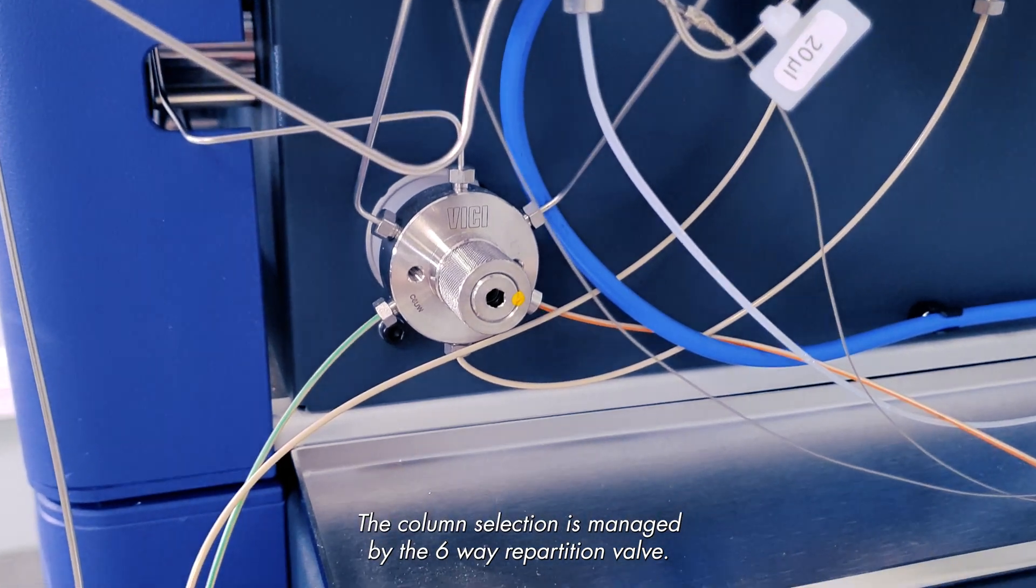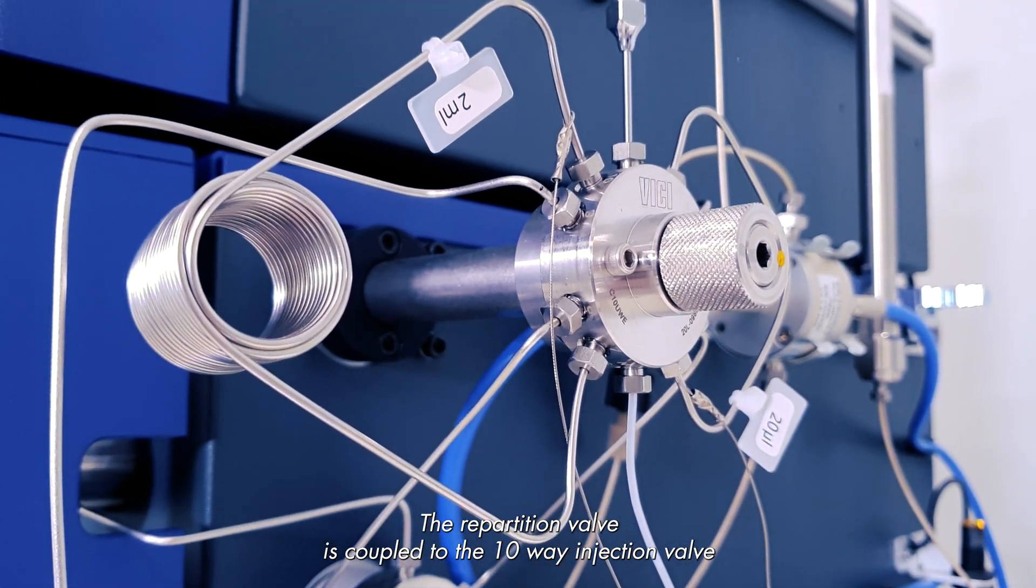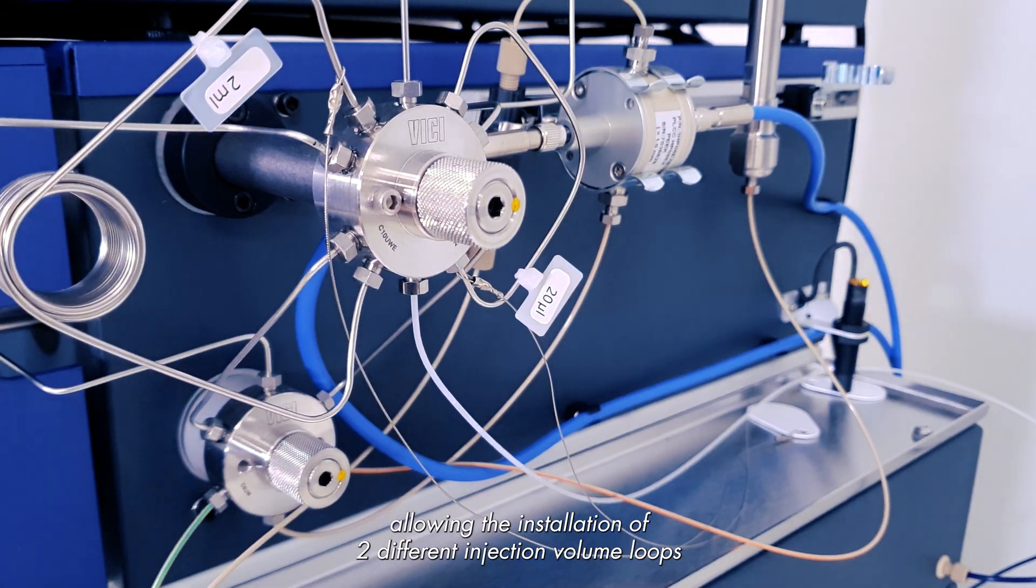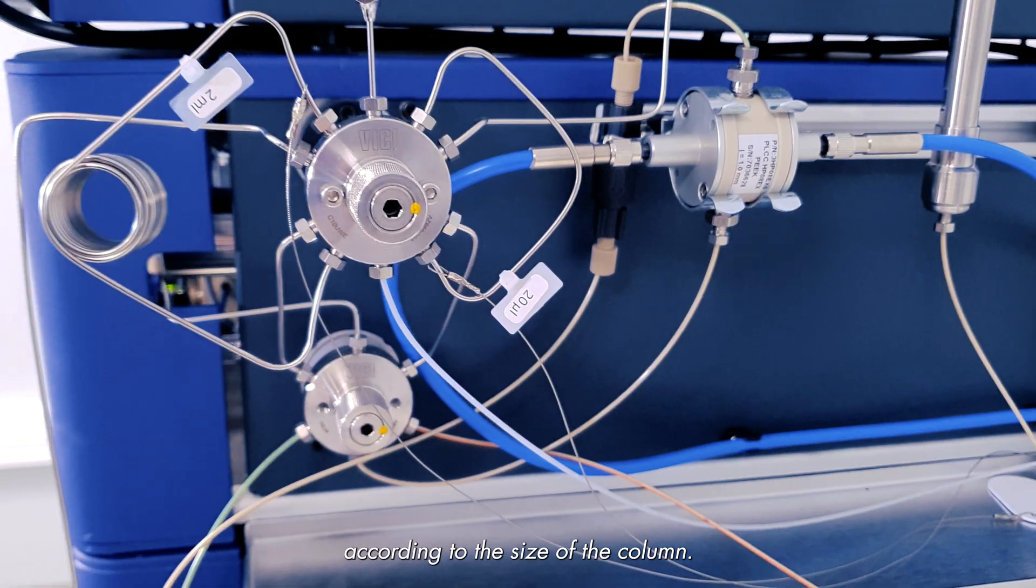The X-Way repartition valve is coupled to the 10-Way injection valve, allowing the installation of two different injection volume loops according to the size of the column.